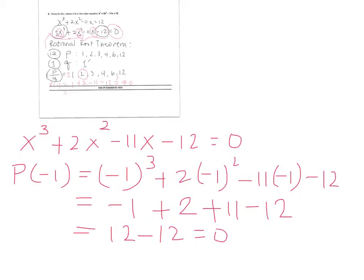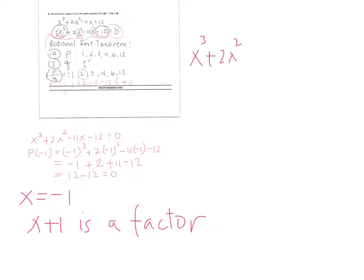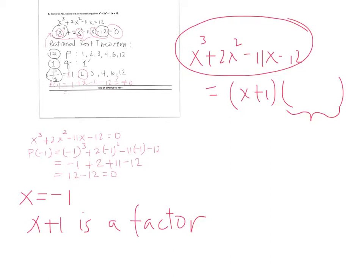Since p of negative 1 is 0, we can get a factor from negative 1. Since x equals negative 1 made the polynomial equal to 0, we can say that x plus 1 is a factor of the polynomial. So x cubed plus 2x squared minus 11x minus 12 can be written as x plus 1 times some other expression, and we divide x cubed plus 2x squared minus 11x minus 12 by x plus 1.